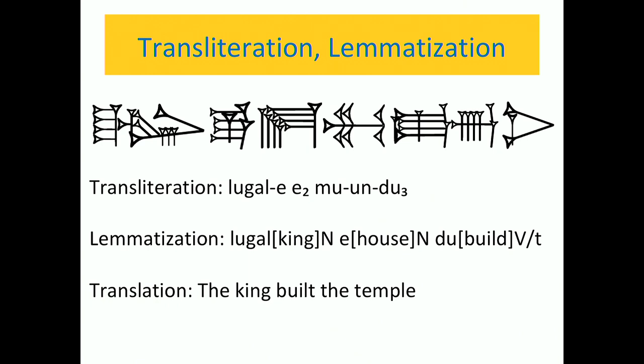I want to draw your attention to the word 'temple' here. In lemmatization we have the word 'house' instead of 'temple,' so the word e2 can mean either house or temple — a temple is the house of a god. What is important is that in lemmatization we only give the most basic translation of that word.